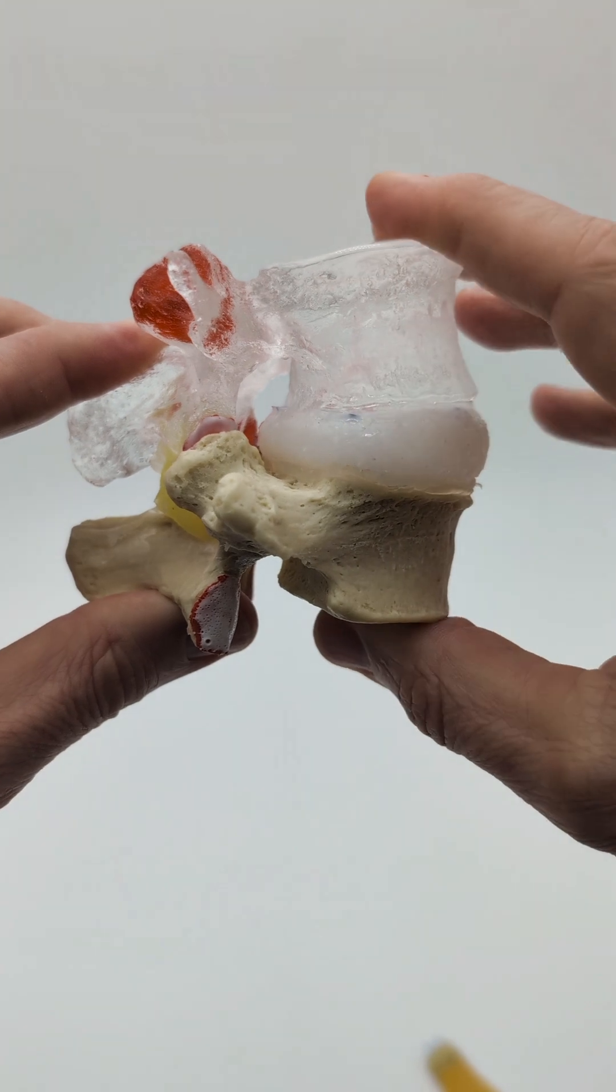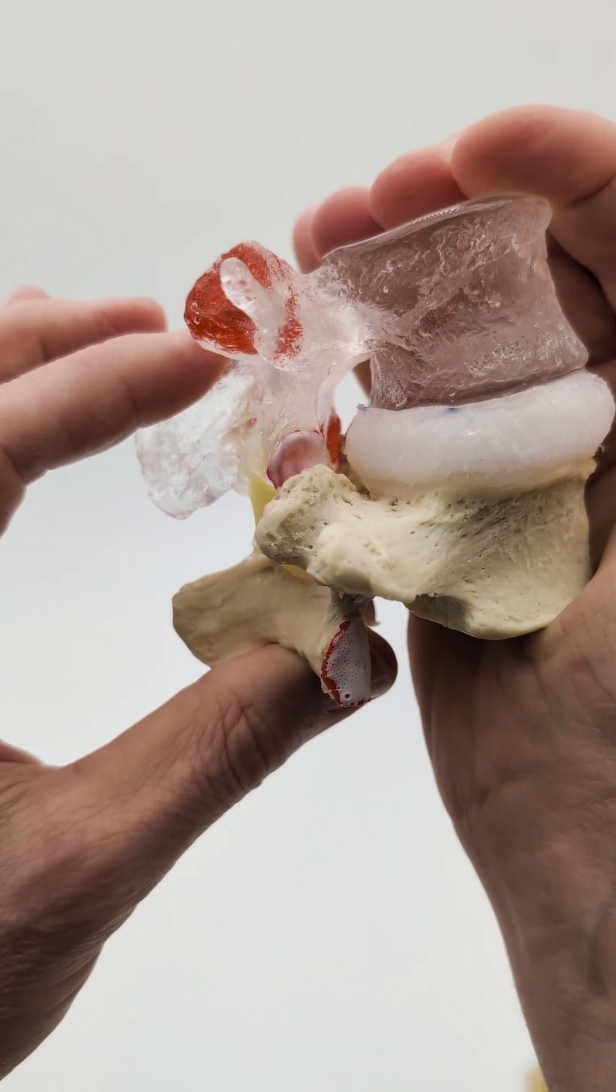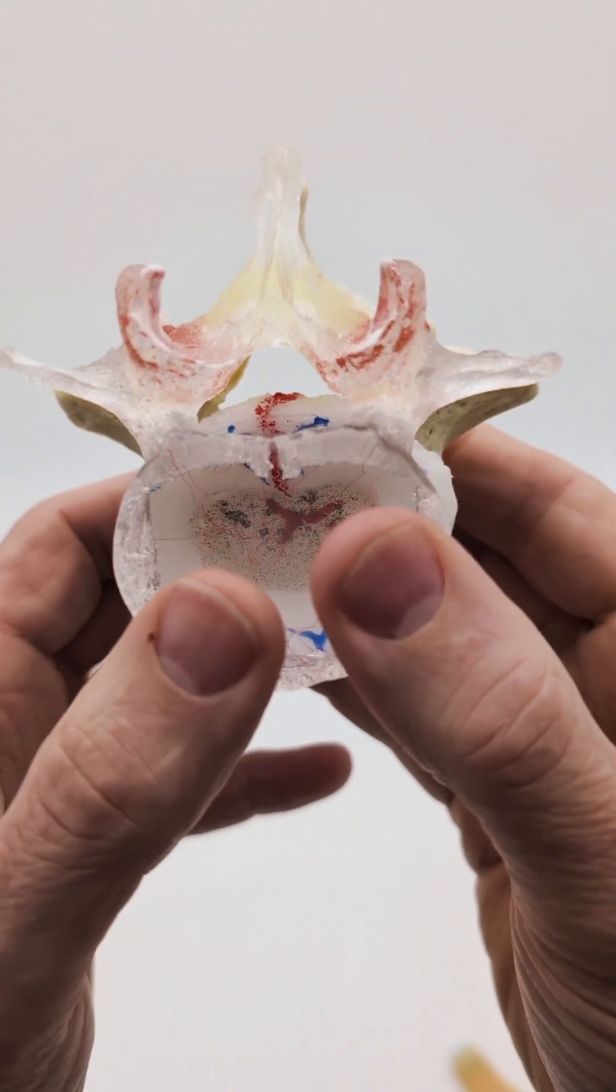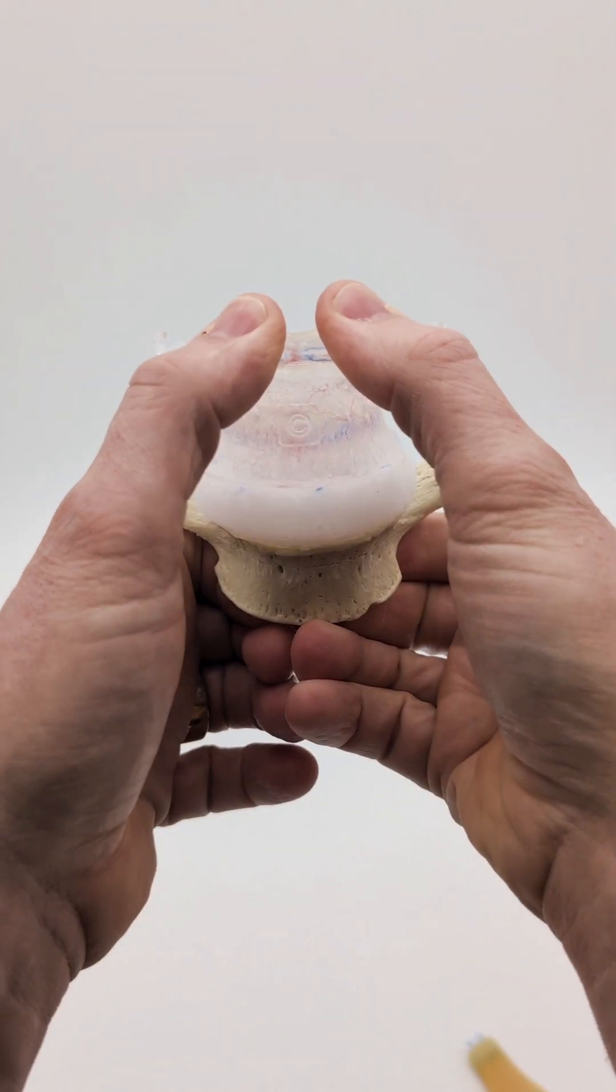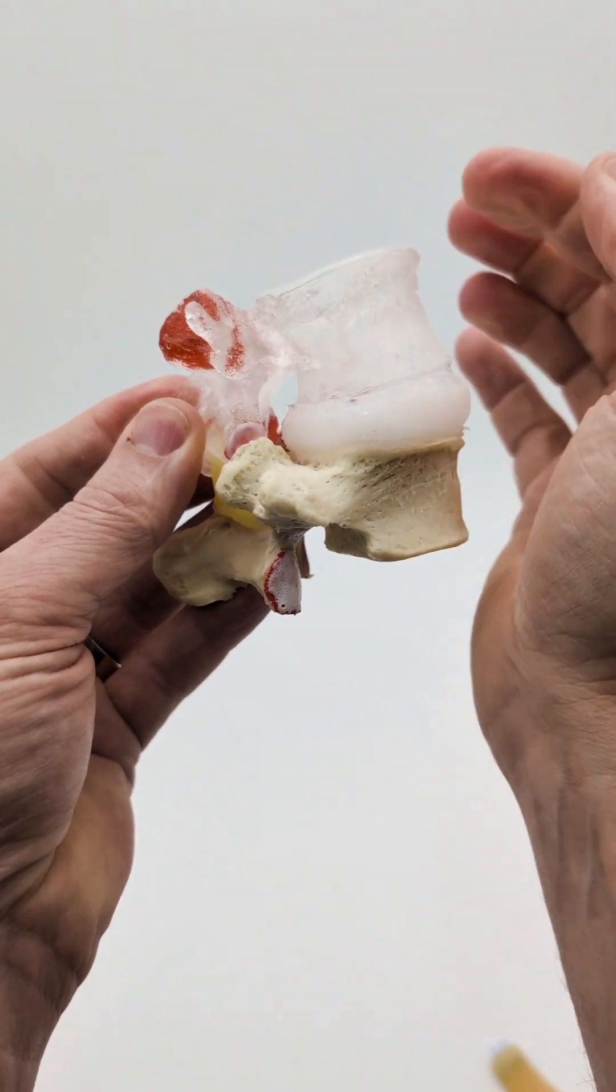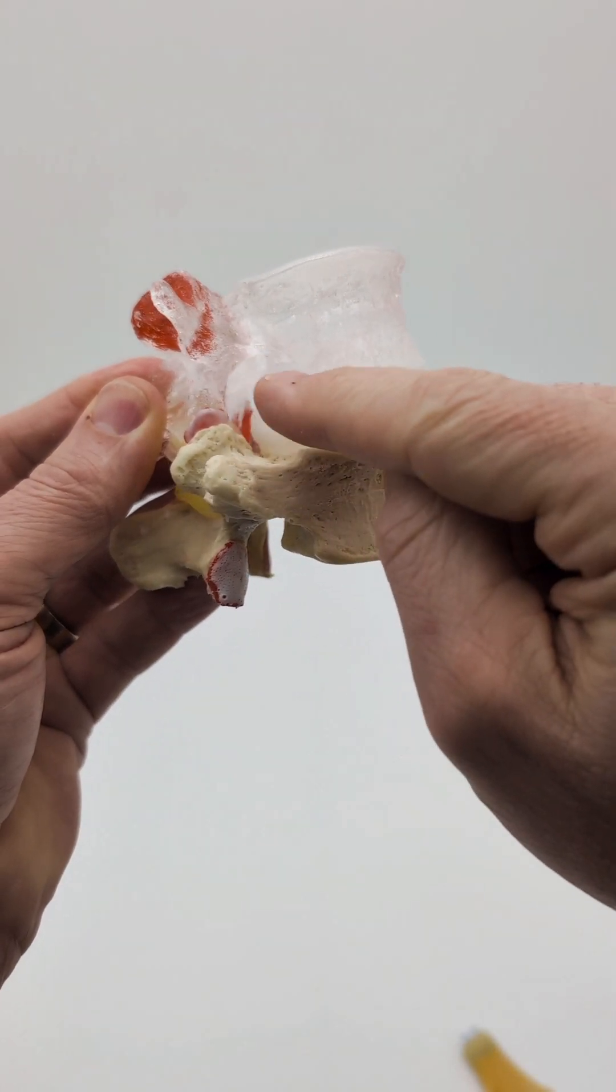Often, patients will report that flexion will cause symptoms, and you can see that here with this model. Under flexion load, dynamic flexion load, the nucleus will drive posteriorly. You can see that by the end plate angles.